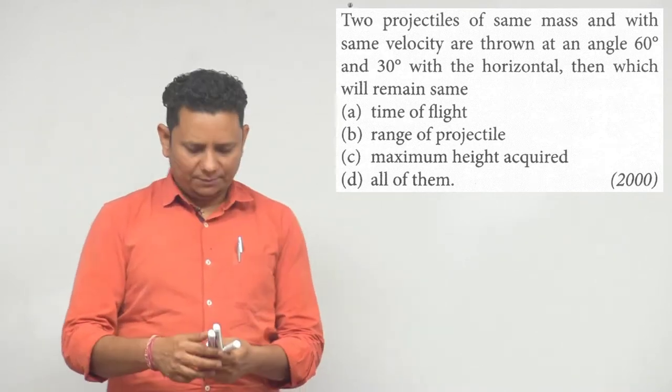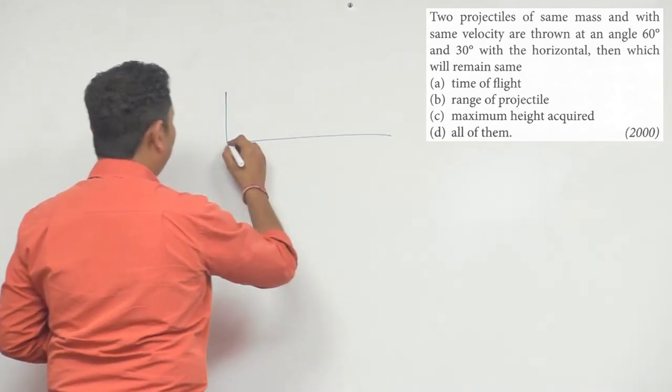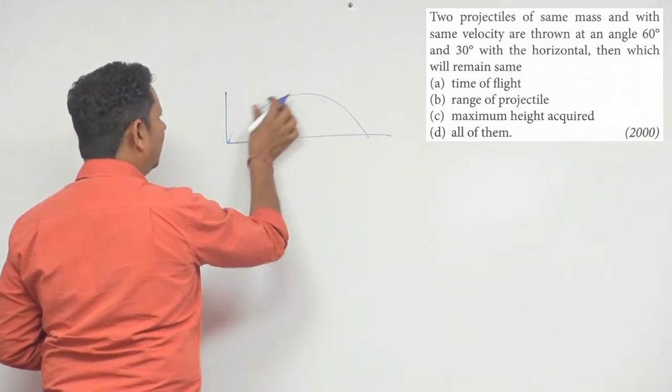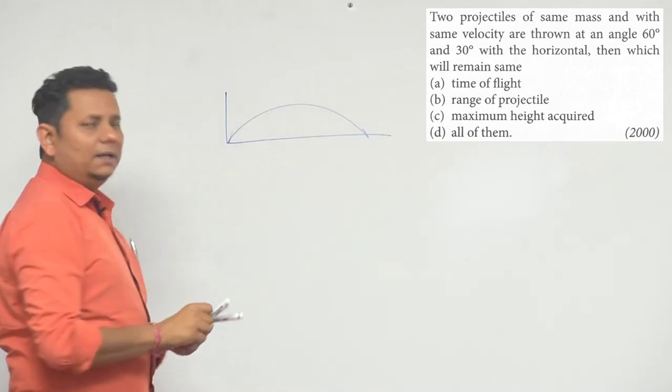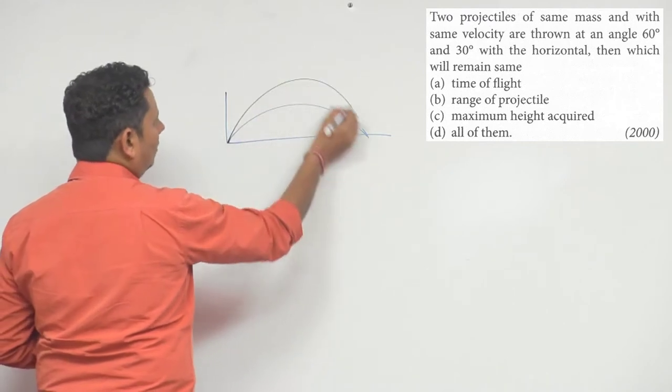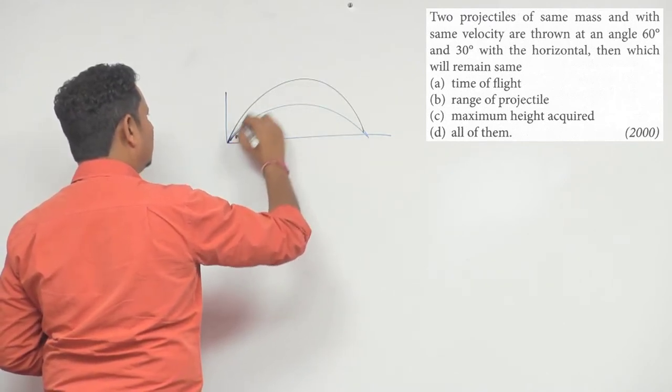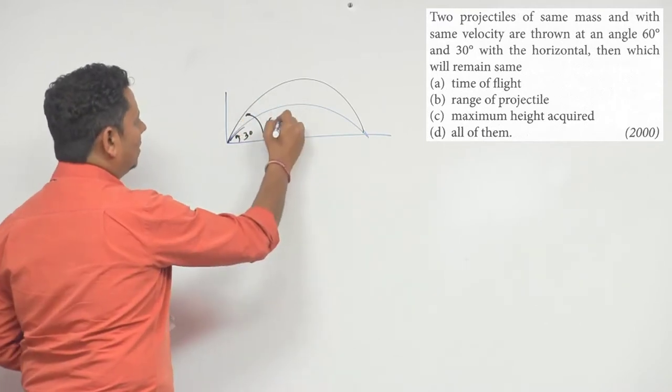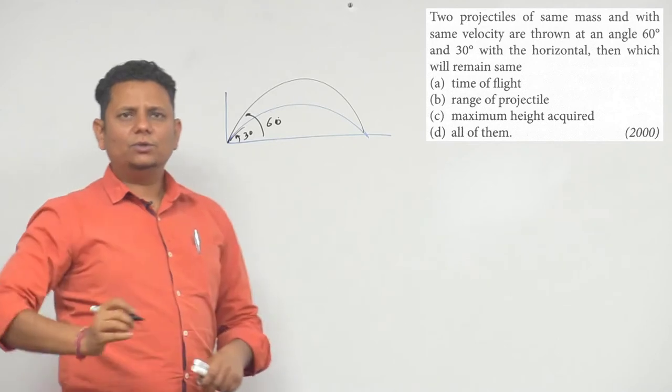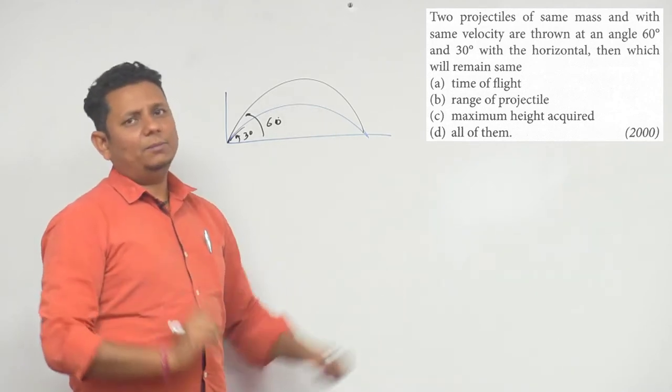Now this question is that you have two projectiles. One projectile you have launched at 30 degree angle and the other projectile you have launched at 60 degrees. So this is my 30 degrees and this is 60 degrees. In this case, you know from the concept that both range will remain the same.